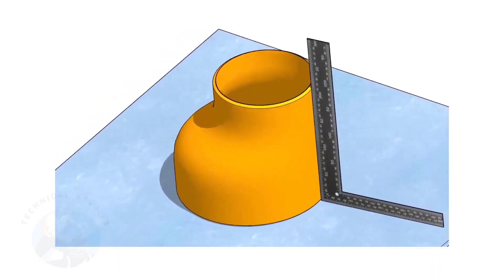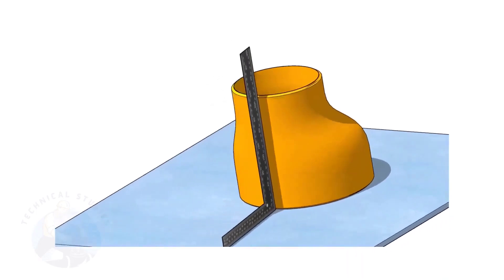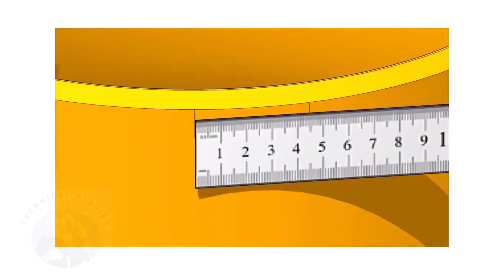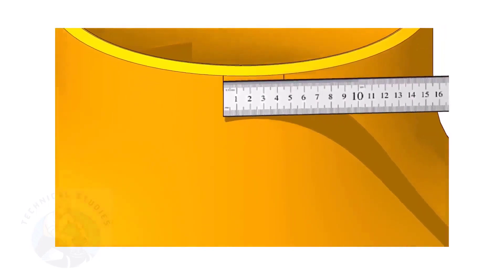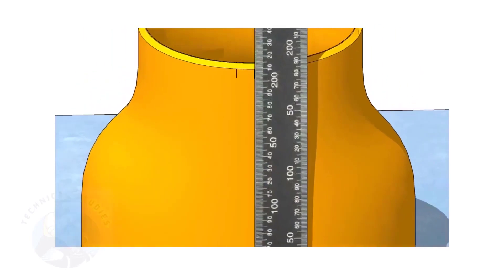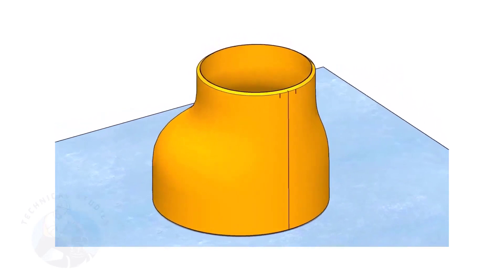It is good practice marking the center lines of the fittings before starting the fit up, especially an eccentric reducer. I have already posted videos on how to mark the center lines of an eccentric reducer in different methods. In this video, I will show you the method of fitting an eccentric reducer to a pipe that is already fitted to a flange.